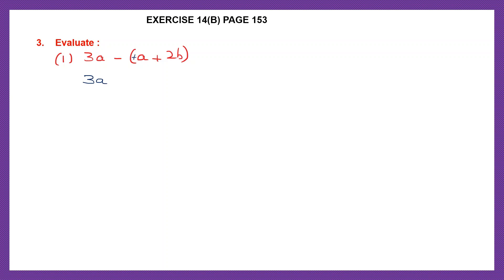3a we write as it is. Now before we open brackets, we need to see what sign is there before the bracket. Here before the bracket we have a minus sign. That means the sign of all the terms inside the bracket will change. So plus a will now become minus a, plus 2b will become minus 2b.